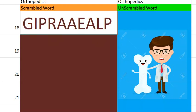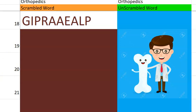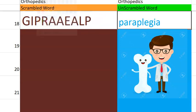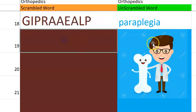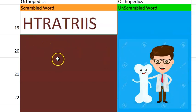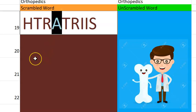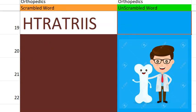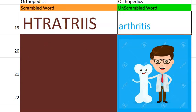Eighteenth one. What do you think this one is? It begins with P, basically like paraplegia. Very good. Paraplegia. Now let's go to the nineteenth one. What do you think this one is? Very easy word — inflammation of the joints, starts with A. Arthritis.